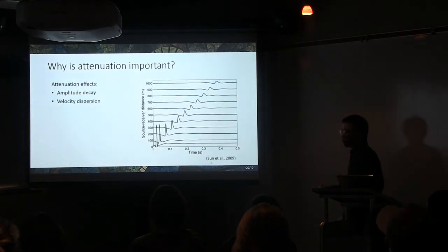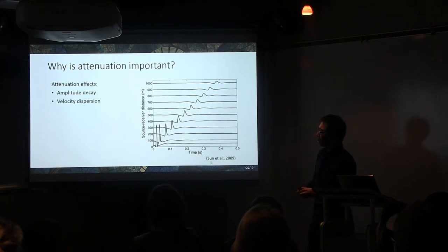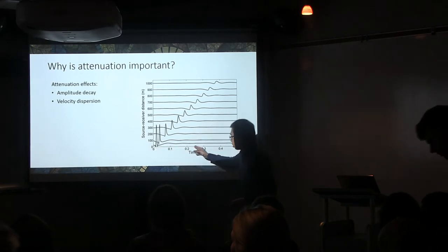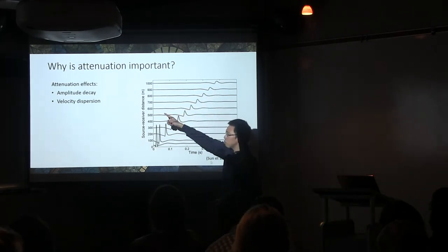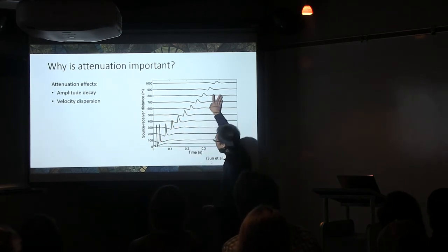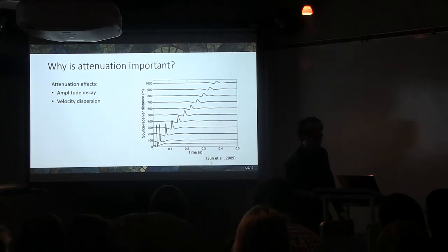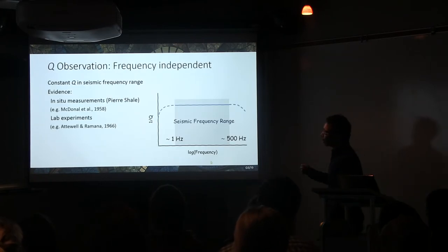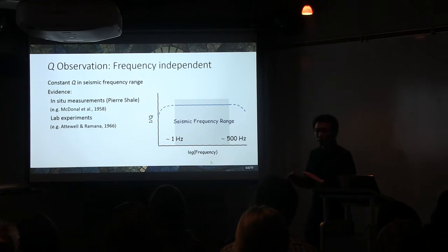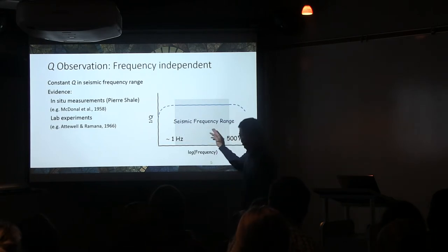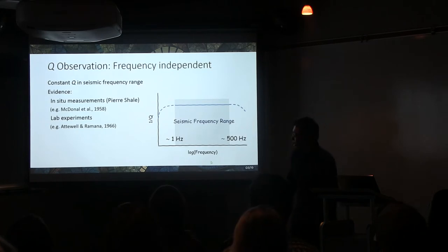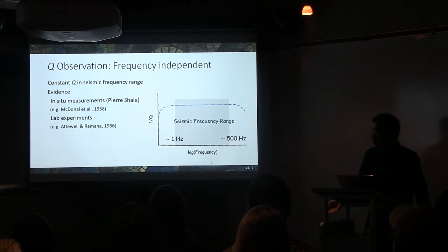In particular, the attenuation has two associated coupling effects, which is amplitude decay and velocity dispersion. The velocity dispersion means the velocity varies with frequencies. As the seismic wave propagates along the distance, the peak becomes smaller and smaller due to the amplitude decay. And also, the waveforms got spread out because of the velocity dispersion. So, we've got to model these two effects. And an important observation of the Q is that it is frequency independent in the seismic frequency band. In other words, in this frequency range, about two orders of frequencies, the Q spectrum is basically flat. And this is supported by many pieces of evidence from lab experiments and field measurements.